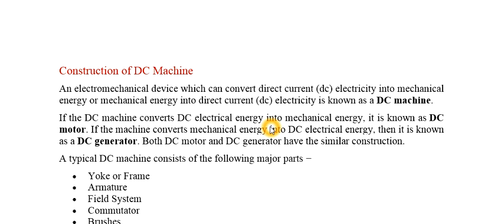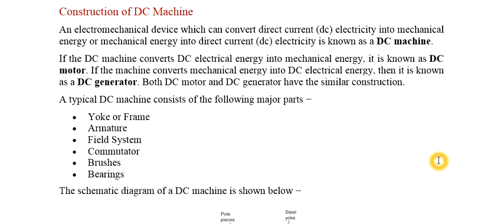Coming to this concept, we are going to discuss the construction of DC machine. Whenever you hear the word 'machine' it can be either a generator or a motor. A motor converts electrical input to mechanical output, and a generator does the opposite — it takes mechanical power as input and converts it into electrical output power.